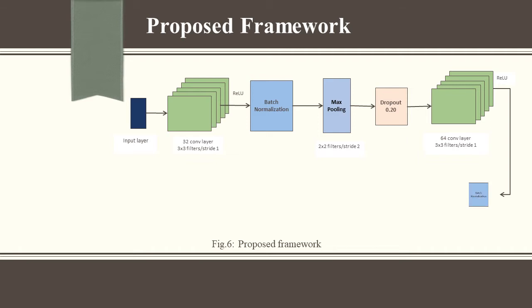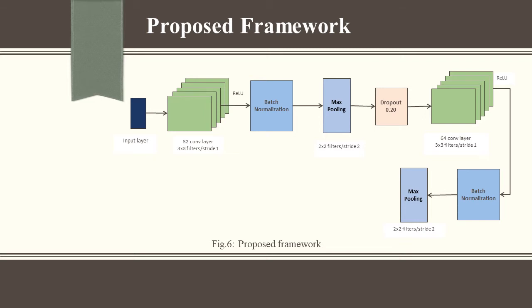The ReLU activation function is also applied to the feature maps. In the second layer, to improve the model performance again, batch normalization is used. The max pooling filter size is 2x2 that moves by a stride of 2 and performs max pooling operation on the feature maps. For the second convolutional layer, the dropout value is 0.25.